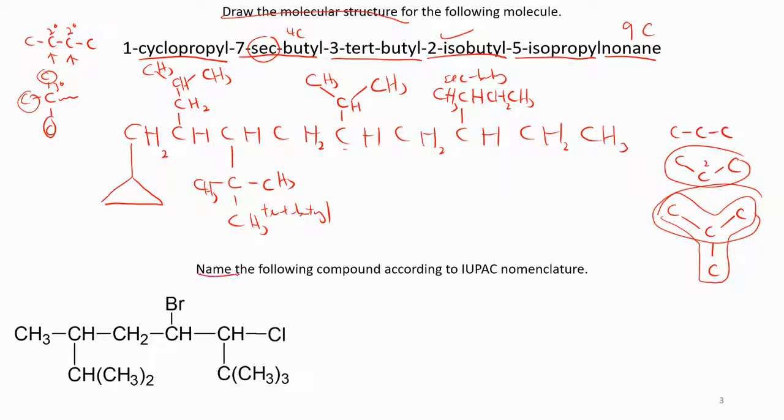Now, another one is name the following compound. When we want to name it, if you see the condensed structure, what you do is I will recommend you to draw again. CH3, CH3, CH3, CH3, CH2, CHBr, CH, CH, CH3, CH3, CH3, CH.